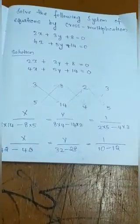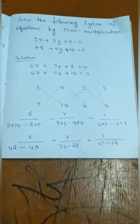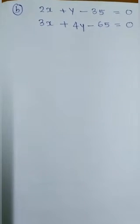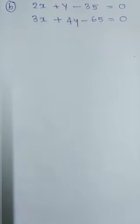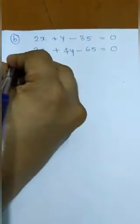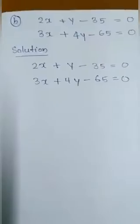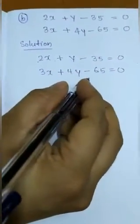If you have any confusions or doubts, you can comment in the comment box. Now the second question for the cross multiplication method: 2x + y − 35 = 0 and 3x + 4y − 65 = 0. First, rewrite the given equations in the answer sheet.